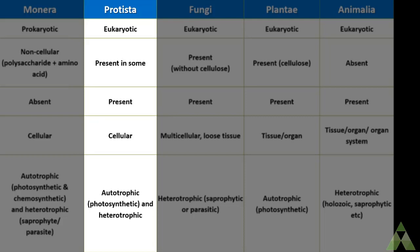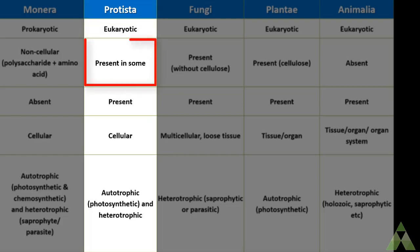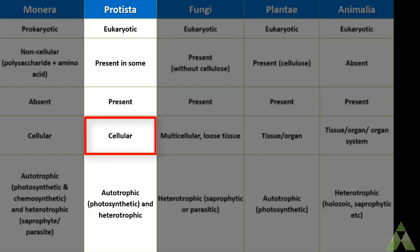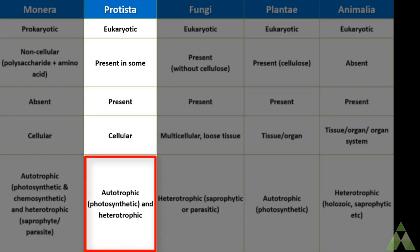Protista are eukaryotic — more developed, with an intact nuclear envelope and organelles like mitochondria (the powerhouse of the cell), chloroplasts needed for photosynthesis, and a DNA repair system. Cell wall may or may not be present — it is not a fixed criterion. Nuclear membrane is present. Body organization is cellular. Mode of nutrition can be autotrophic or heterotrophic.